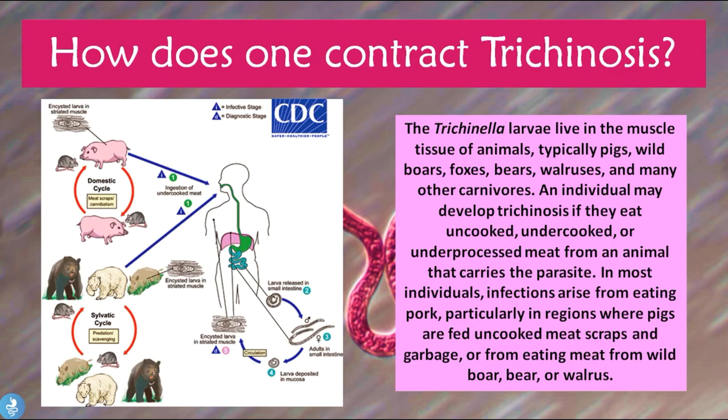The Trichinella larvae live in the muscle tissue of animals — typically pigs, wild boars, foxes, bears, walruses, and many other carnivores. An individual may develop trichinosis if they eat uncooked, undercooked, or under-processed meat from an animal that carries the parasite. In most individuals, infections arise from eating pork, particularly in regions where pigs are fed uncooked meat scraps and garbage, or from eating meat from wild boar, bear, or walrus.